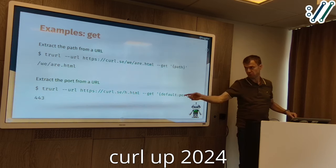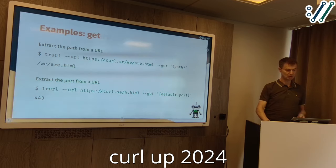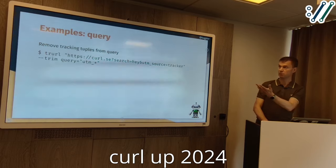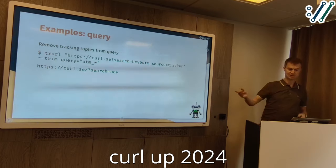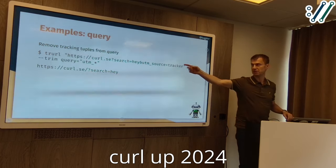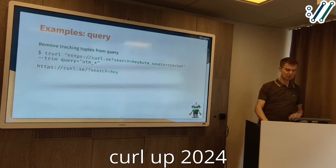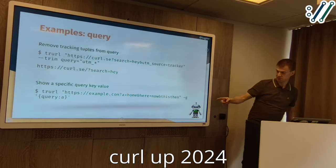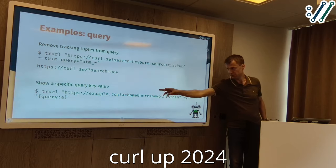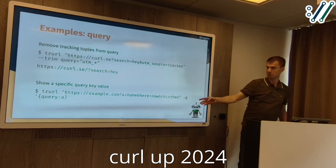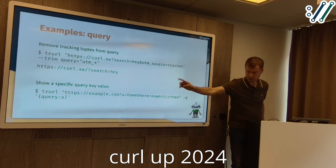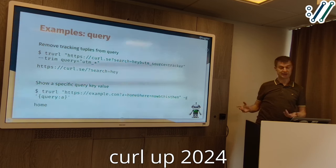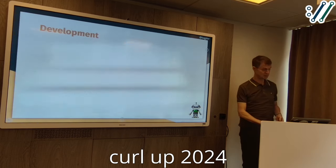The port number might not even be set in the URL — it's just implied because it's HTTPS. So you can ask for the default port used by the scheme. Or you can operate on the query: for example, trim to remove parts of the query, like those common tracker things like UTM underscore parameters — remove those. If you just want to get a specific key out of the query, since it's a common setup with key-value pairs, you can extract it. Nothing complicated, but it helps shell script users.